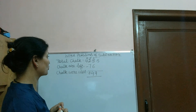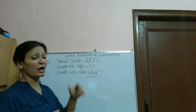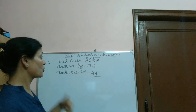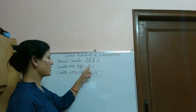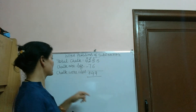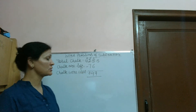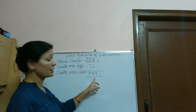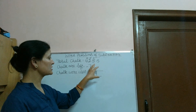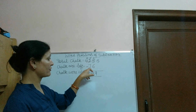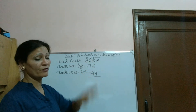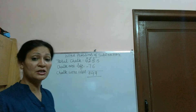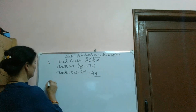I am repeating again. Total chalk in the chalk box: 125. Chalk left: 76. Chalk used: 49. If we subtract 76 from 125, 49 chalk were used from the chalk box. Question 2.